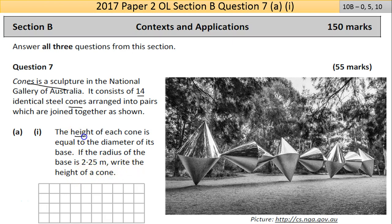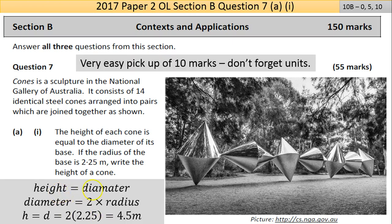The important part here is the height equals the diameter, and we're given the radius. You have to remember that the diameter is twice the radius. So the height equals diameter, which equals 2 times 2.25, which equals 4.5 meters.